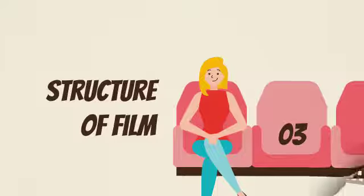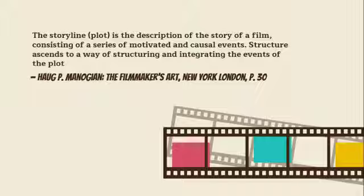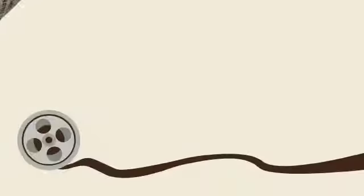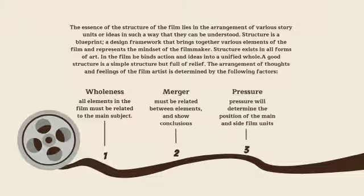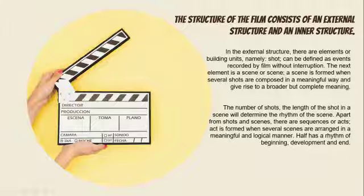Three: structure of the film. The storyline or plot is the description of the story of a film consisting of a series of motivated and causal events. The story of the film consists of an external structure and an inner structure. In the external structure, there are elements or building units, namely shot and scene.